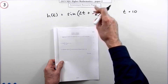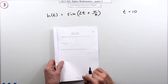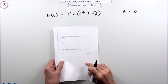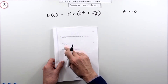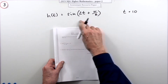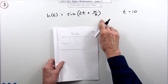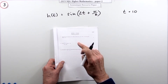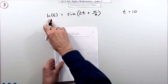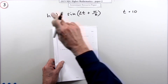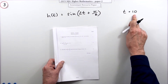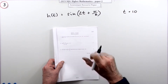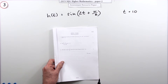Question three from paper two of the 2021 Higher Maths resource paper — a three-mark question. Given that h is a trig function of a linear expression, determine the rate of change when t is 10. That means there's a calculation, so you'll need to get your calculator out.